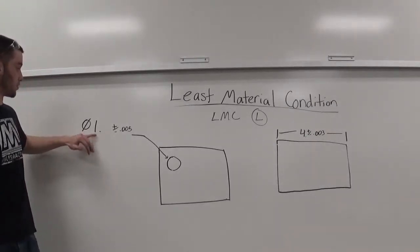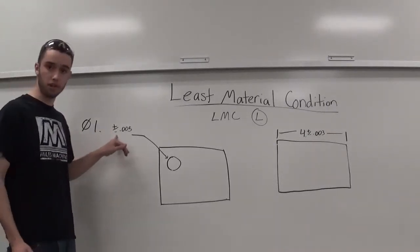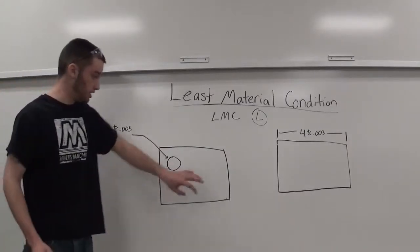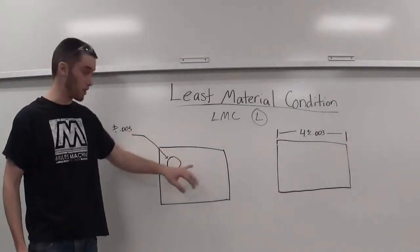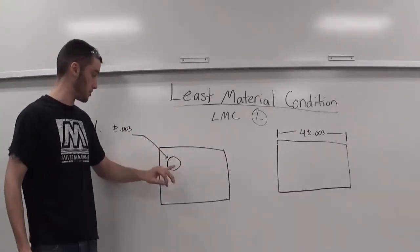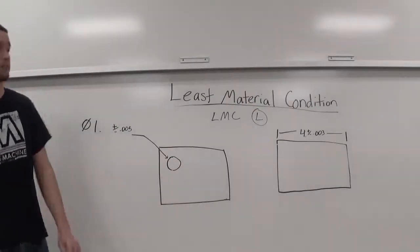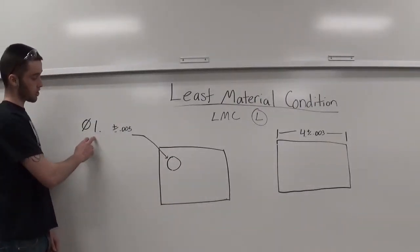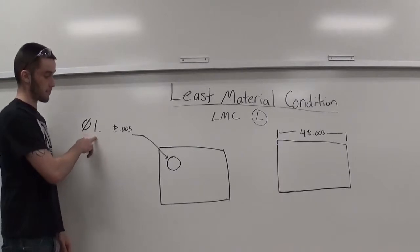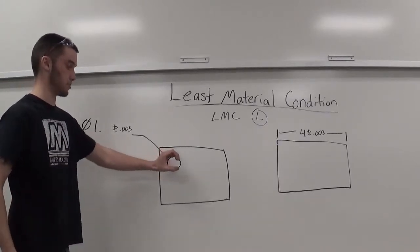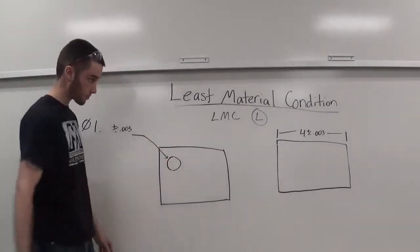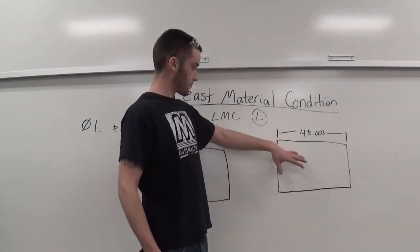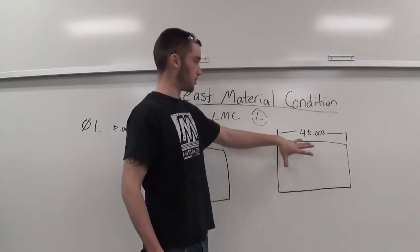Here we have a hole with a diameter of one inch and a tolerance of plus or minus five thou. To have the least amount of material, we want this hole to be the biggest it can be but staying within our tolerance, so here we want the dimension to be one inch and five thousandths, causing this hole to be as big as it can be, taking away the most material.